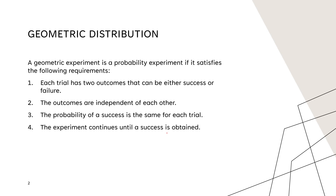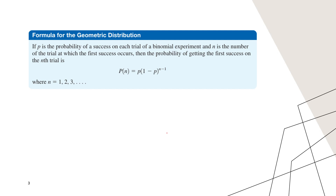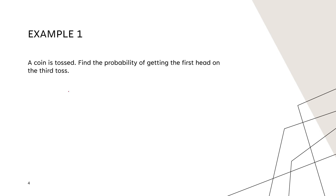The formula for geometric distribution is: if p is the probability of success in each trial of a binomial experiment, and n is the number of the trial at which the first success occurs, then the probability of getting the first success on the nth trial is P(n) = p times (1 minus p) raised to n minus one, where n is 1, 2, 3, and so on.